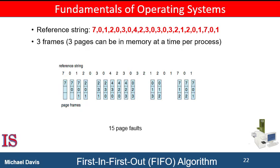The first-in-first-out page replacement algorithm is easy to understand and program. However, its performance is not always good. On the one hand, the page replaced may be one that was used a long time ago and is no longer needed. On the other hand, it could contain a heavily used variable that was initialized early and is in constant use. Even if we select for replacement a page that is in active use, everything still works correctly, but we can do it better. After we replace an active page with a new one, a fault occurs almost immediately to retrieve that active page. A bad replacement choice increases the page fault rate and slows process execution. It does not, however, cause incorrect execution.